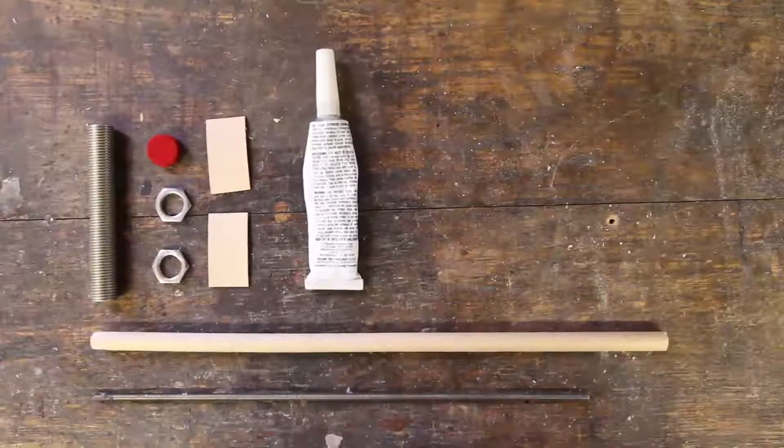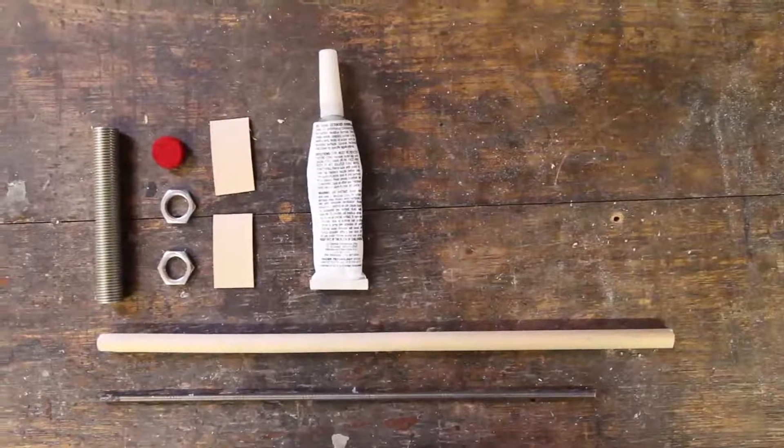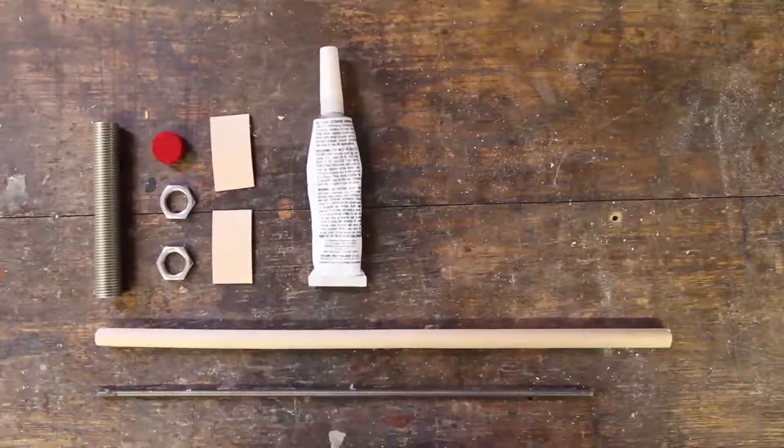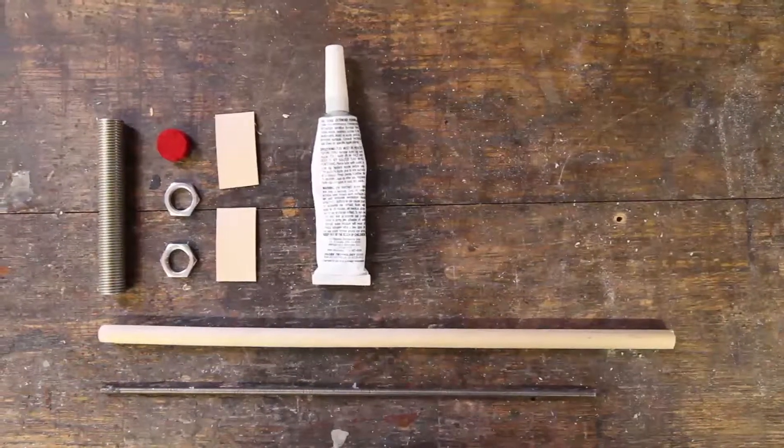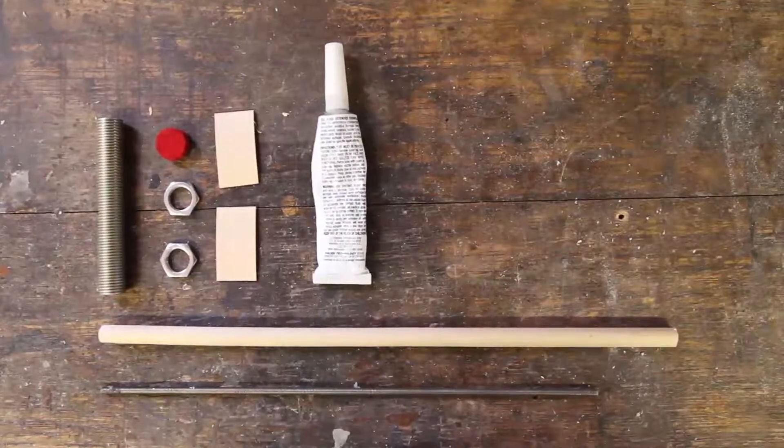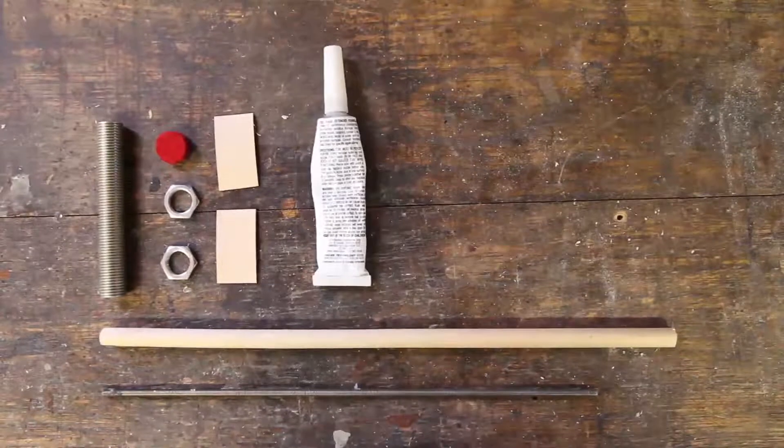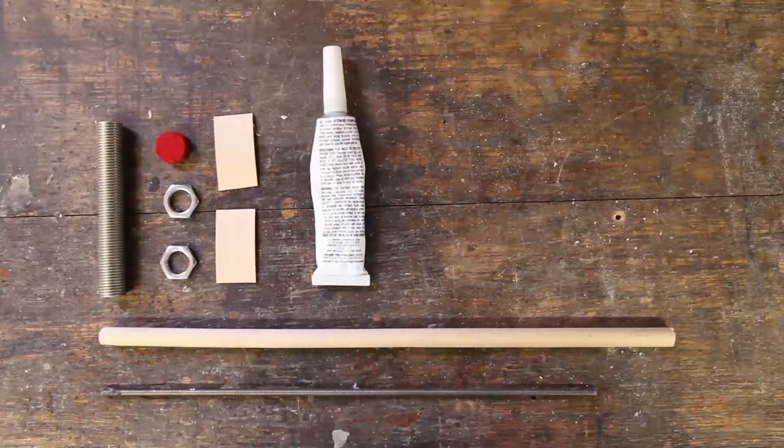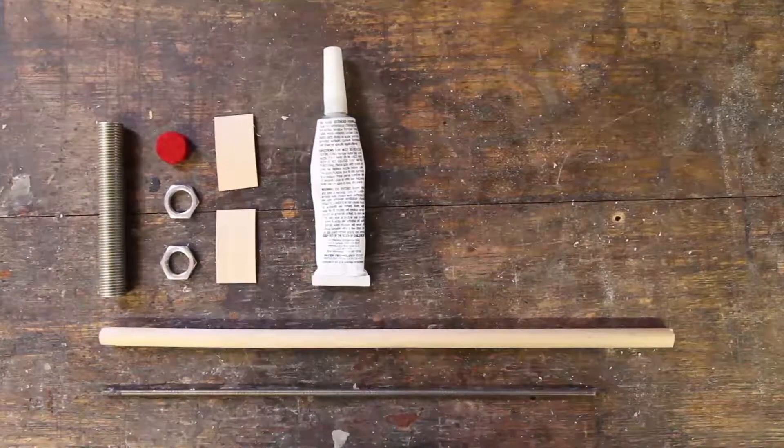Parts needed for this assembly that are not supplied in the kit. One threaded rod, a quarter inch by two inches. This thin wall threaded rod can be found in the lighting section of Lowe's, Home Depot, or a hardware store.